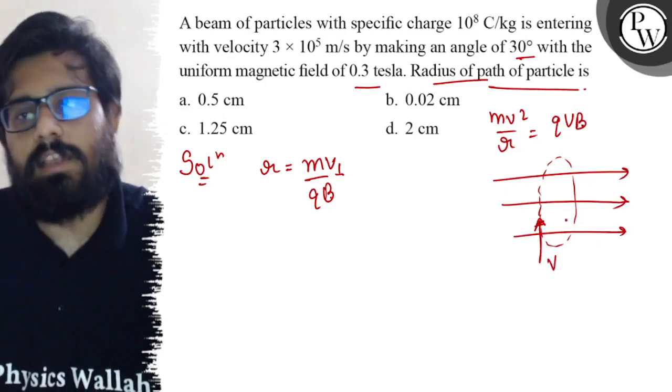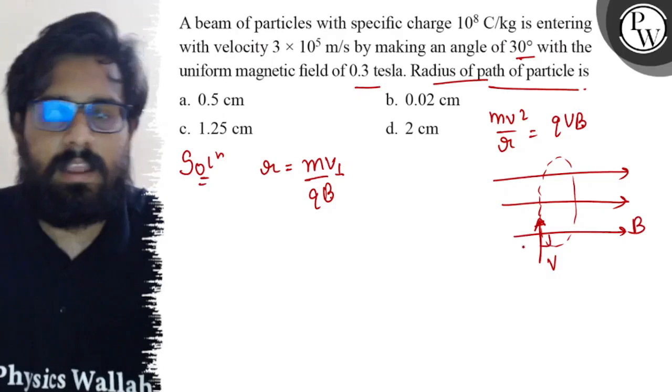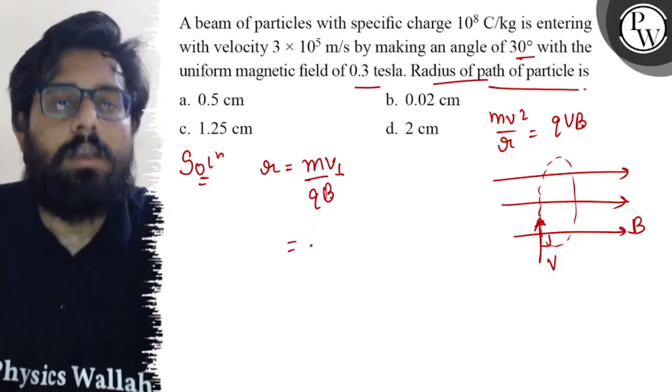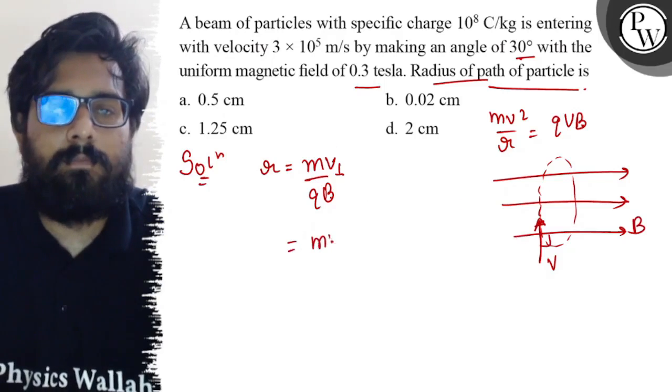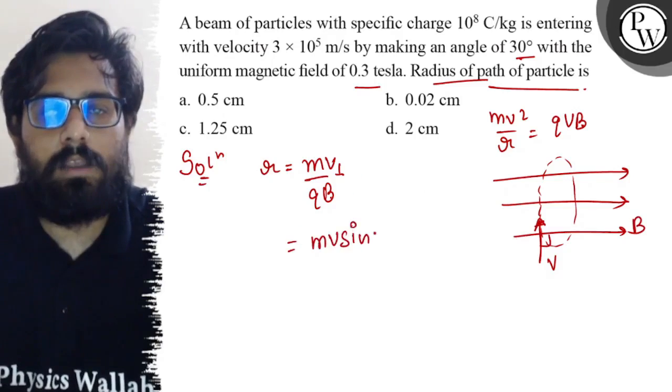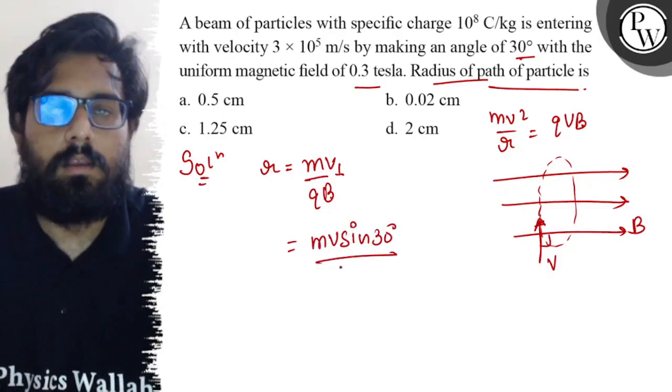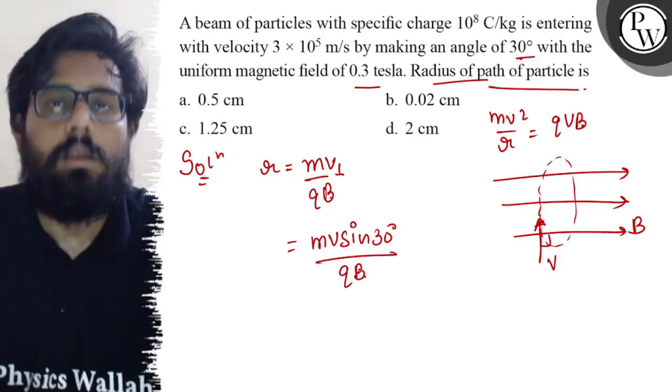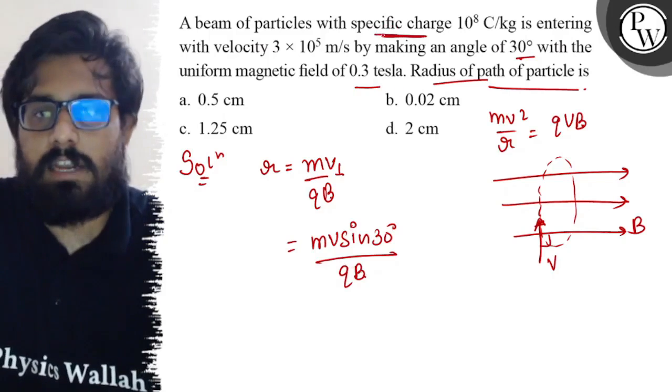The velocity is perpendicular to the magnetic field in that case. So this can be written as mv sine of 30 degrees divided by qB. Now, what is the given data? Specific charge.